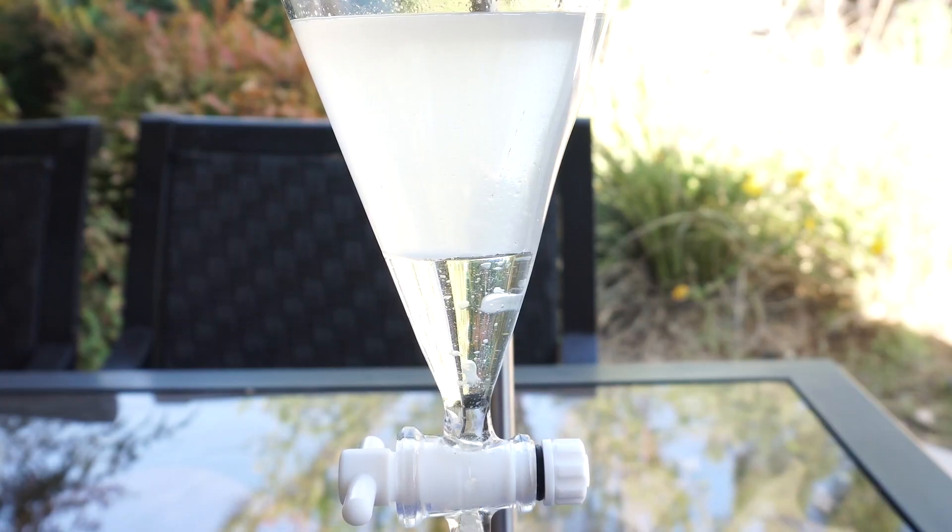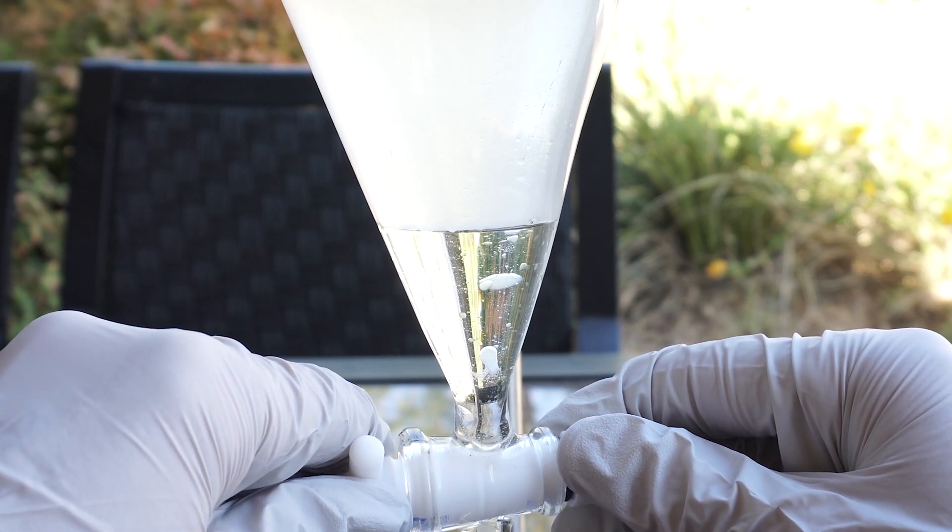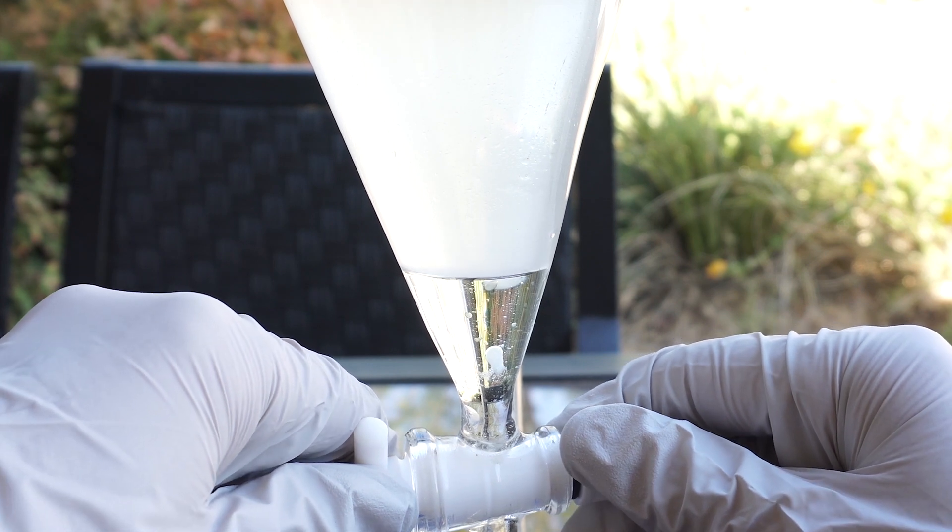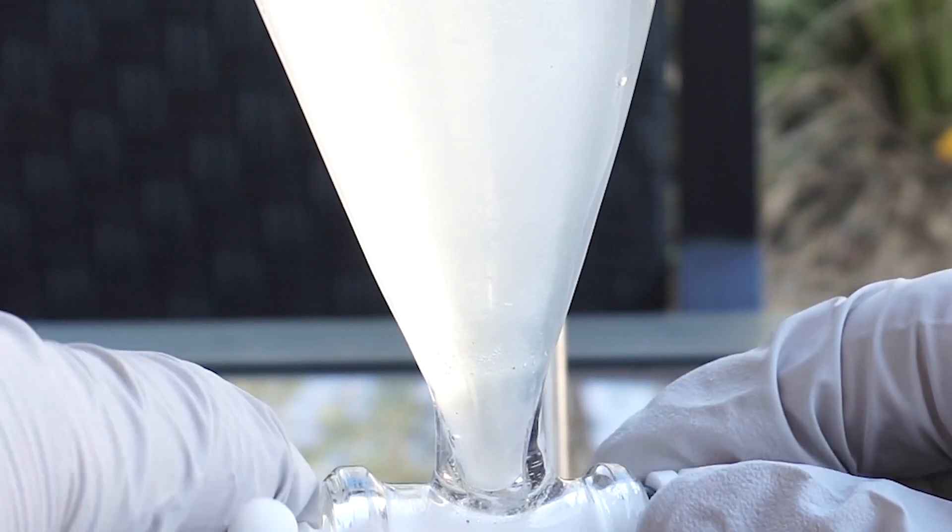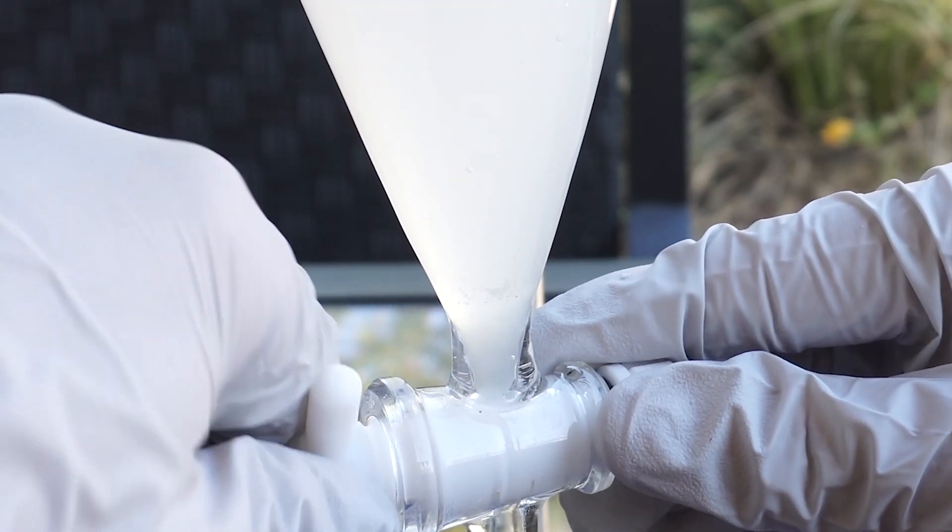We allow the layers to sit and separate out the lower DCM layer into a flask. I then repeated this step 6 times until I had used 150 milliliters of DCM. It should be noted though that I recovered about 149 milliliters of the 150 milliliters, so almost nothing was wasted.